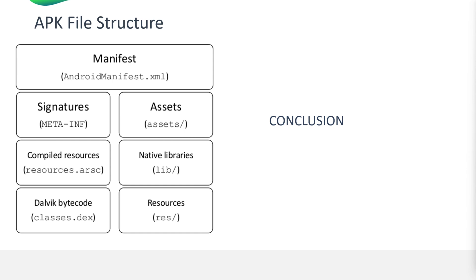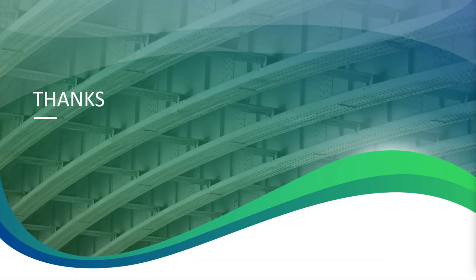We have explored the critical elements of an Android application, including the manifest, signature, assets, compiled resources, native libraries, Dalvik bytecode, and resources. Understanding these components is vital for identifying and mitigating security vulnerabilities in Android applications. In our upcoming videos we will dive deeper into practical penetration testing techniques, covering static and dynamic analysis, reverse engineering, and best practices for securing your application. If you found this video helpful, please give it a thumbs up and share it. Leave your questions in the comments below, and make sure to subscribe and hit the notification bell so you don't miss future content.